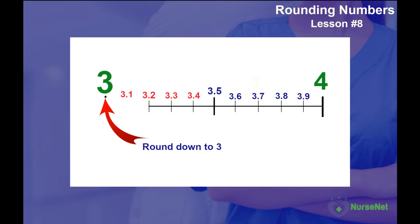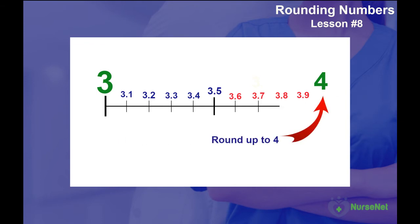Now look at all the numbers that are nearer to the 4. They include 3.6, 3.7, 3.8 and 3.9. So if we have any of these numbers, and we wanted to round to the nearest whole number, we would round to 4, since they are closer to 4 than they are to the 3. Therefore, we are rounding up to 4.